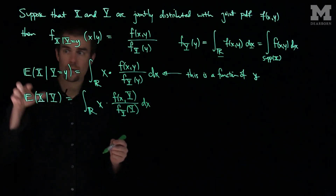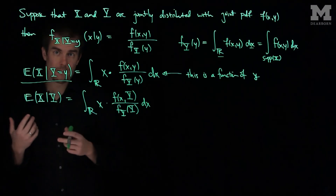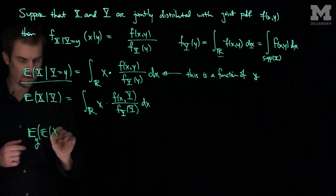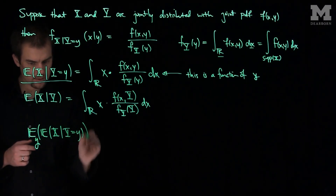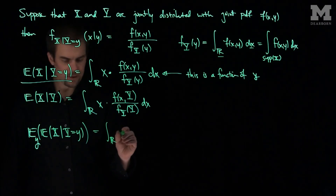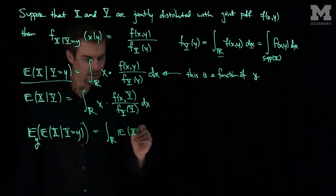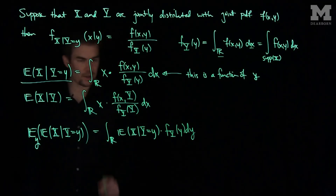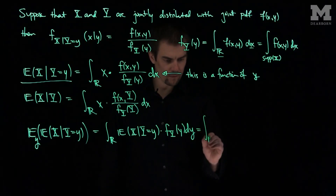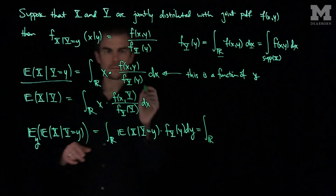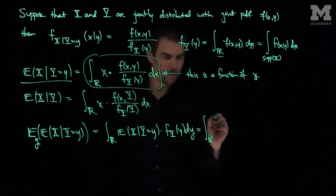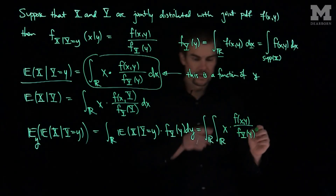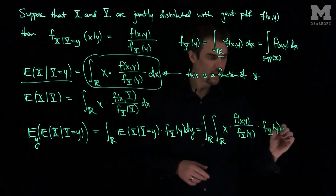What I'll do now is compute the expected value of this random variable with respect to the y variable. If we compute the expected value with respect to y of the expected value of x given y equals little y, this becomes the integral over r of that function — the expected value of x given y equals little y — times fy of y, the marginal pdf of y. Filling in the integral representation, this becomes the double integral over r of x times f of xy over fy of y, times fy of y, dx dy.